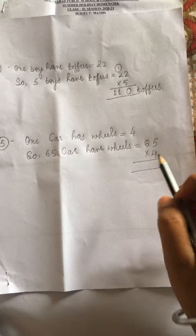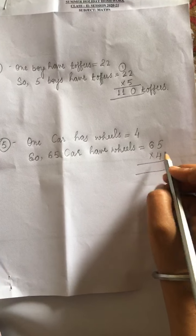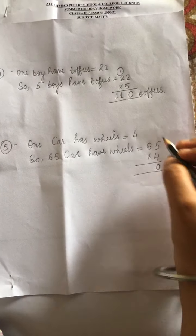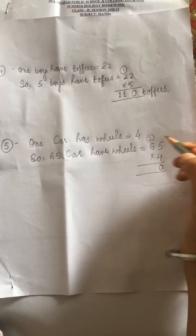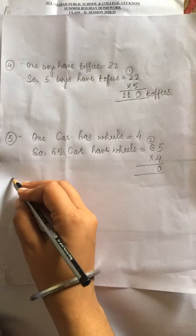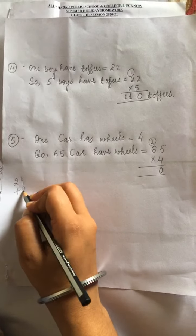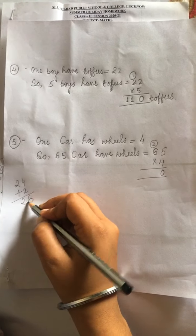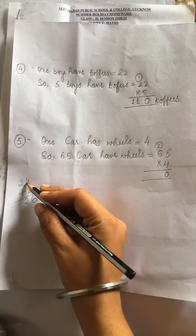So multiply karenge. 4 times 5 is 20. 20 ka 0, and 2 carry. 4 times 6 is 24, 24 plus 2, 26.